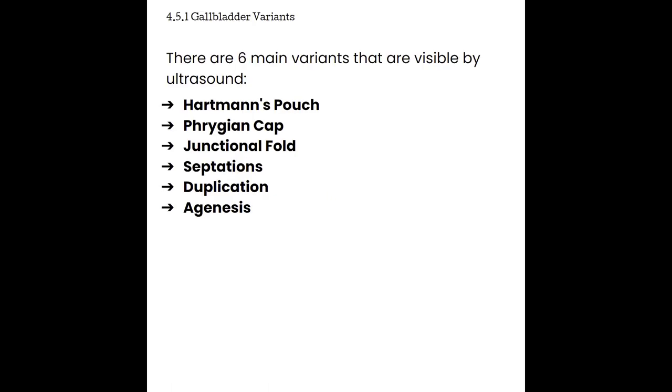Section 4.5, anatomical variance. The gallbladder can take on a lot of different appearances from person to person. These variants are not typically pathology, but we should identify them when imaging. There are six main gallbladder variants visible by ultrasound: Hartmann's pouch, Phrygian cap, junctional folds, septations, duplication, and agenesis.